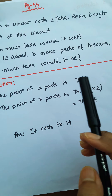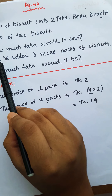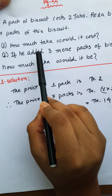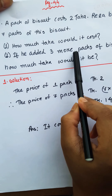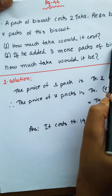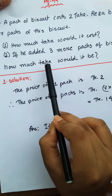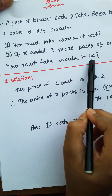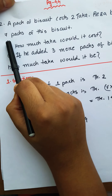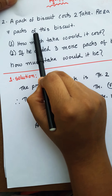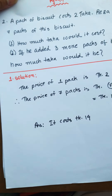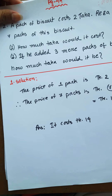Our second question: if we added 3 more packs of biscuits, how much taka would it be?